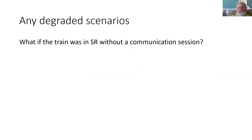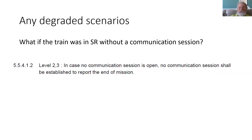In degraded situations, one relevant scenario is if the train is in staff responsible but hasn't got a communication session — which could of course be the reason why it is in staff responsible — it will not establish a communication session to report end of mission. So if you have a system previously known as level three, where you're reliant on the position report and the integrity of the train, in that situation where a train has been moving in SR without a communication session, it won't report a position and its position will be unknown to the RBC. So that is end of mission.